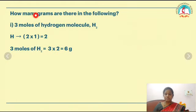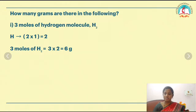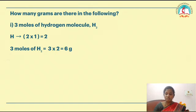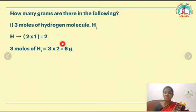This is also a textbook question: how many grams are there in 3 moles of hydrogen molecule? Hydrogen molecule H₂ has 2 atoms. The atomic mass of hydrogen is 1, so 2 × 1 = 2. We have 3 moles of hydrogen molecules, so 3 × 2 = 6 grams. Therefore, 6 grams of hydrogen are present in 3 moles of hydrogen.